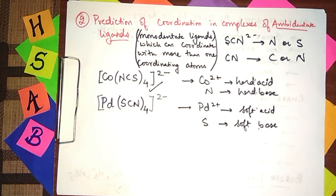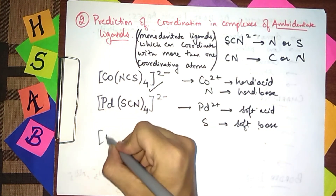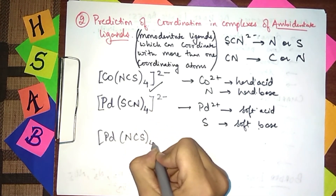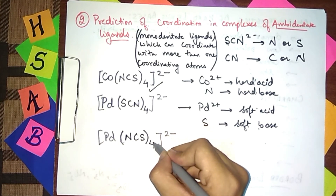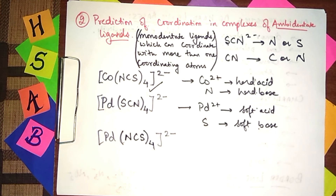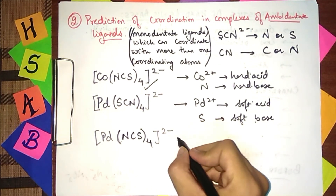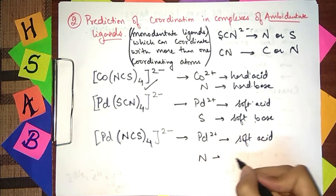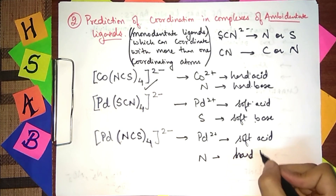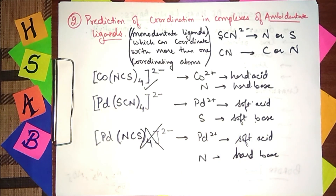However, if we write palladium isothiocyanate [Pd(NCS)₄]²⁻, where Pd²⁺ (soft acid) is coordinating through nitrogen (hard base), this complex is unstable — because soft acid and hard base are mismatched. I have discussed two applications, and in the next video, I will discuss the remaining applications of the HSAB principle. Thanks for watching, and do subscribe to my channel for more videos.